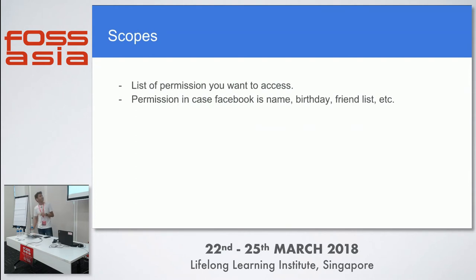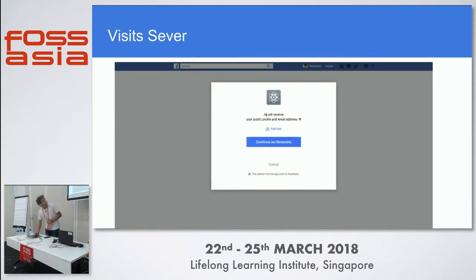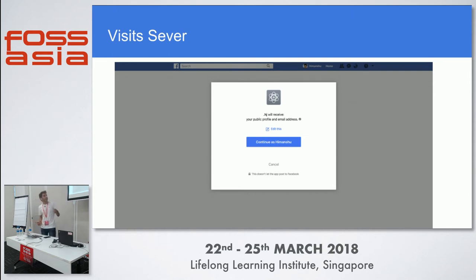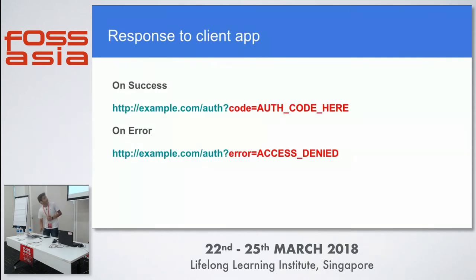You also define scopes — a list of permissions you want to obtain from the user. In the case of Facebook, these can include your name, birthday, friend list, permission to post on your behalf, movies you watch, and so on. When you click the link, Facebook asks if you want to provide your profile information, email address, and other data to that app. If you continue, you are redirected and the app gets an authorization code; if you don't authorize, an error is sent to the app.